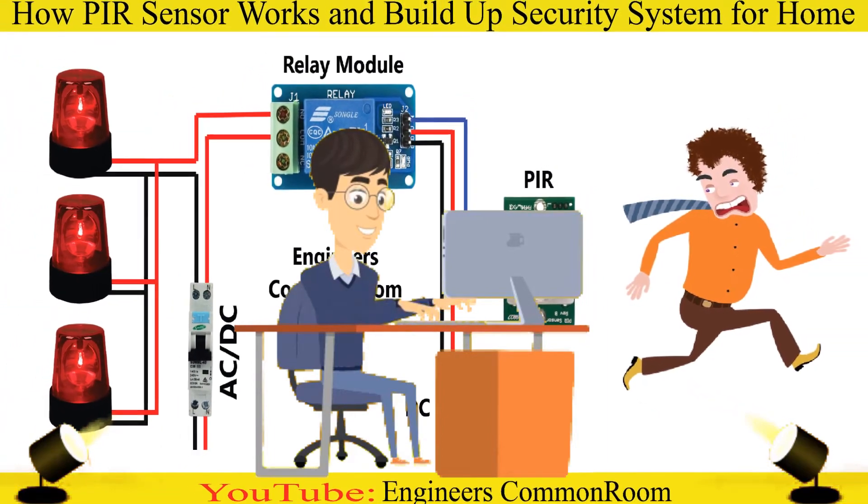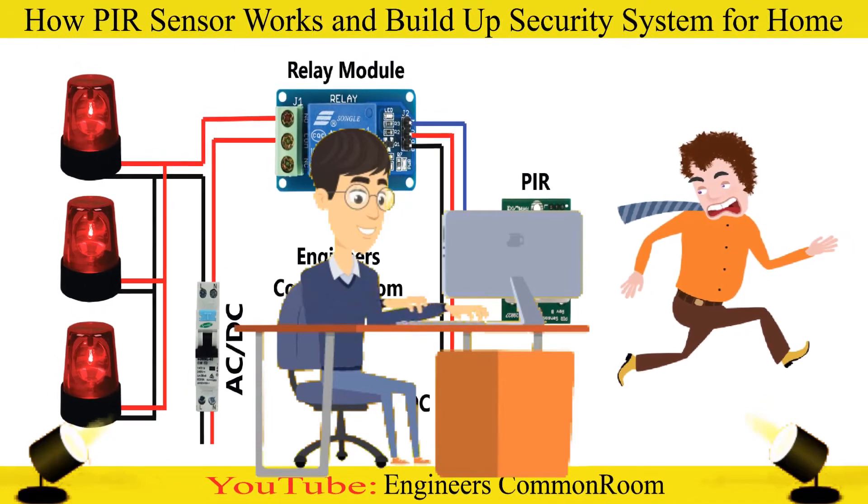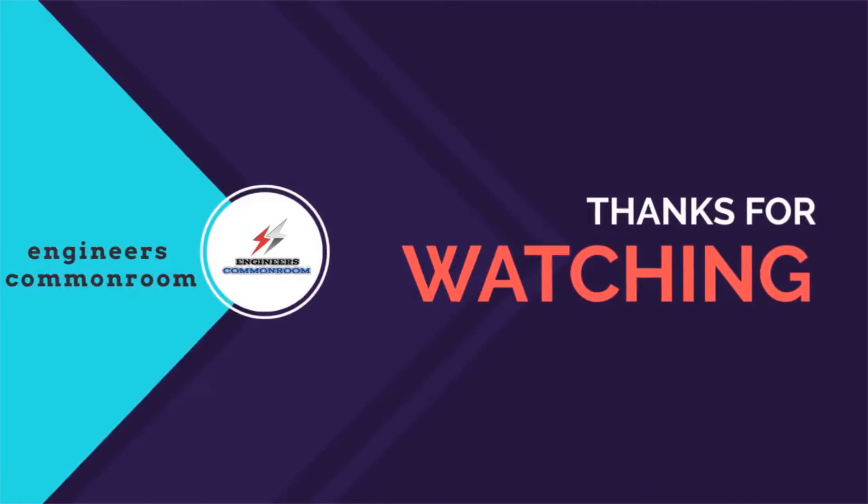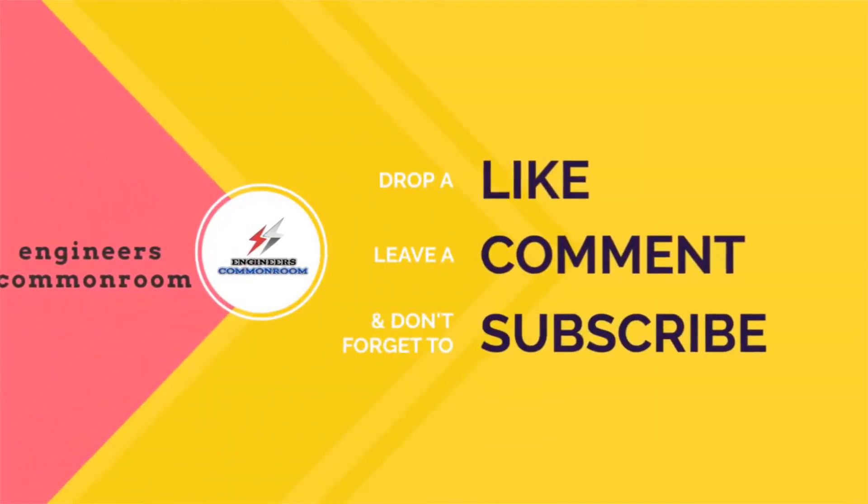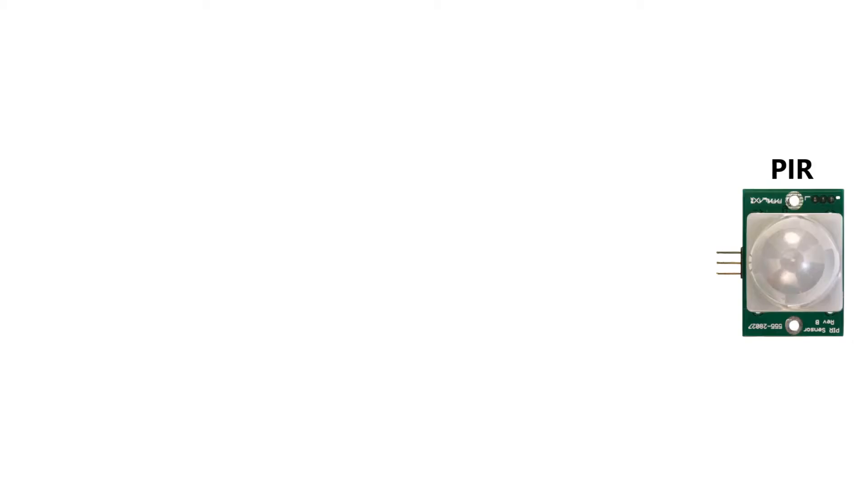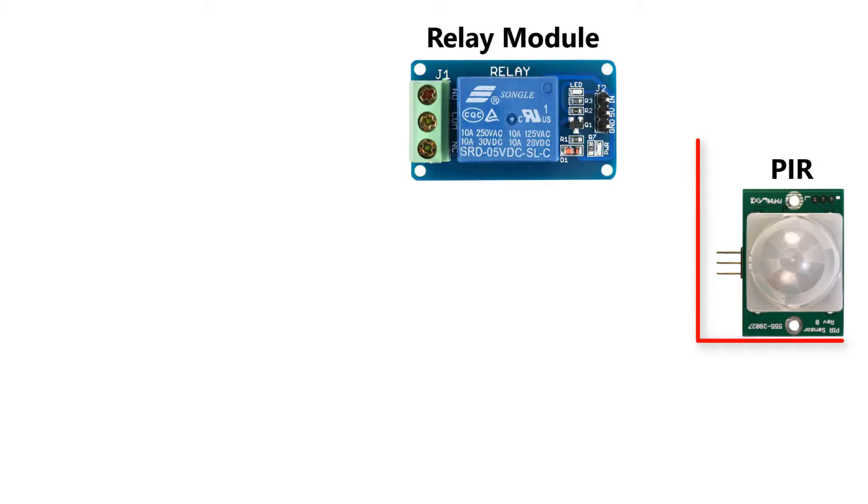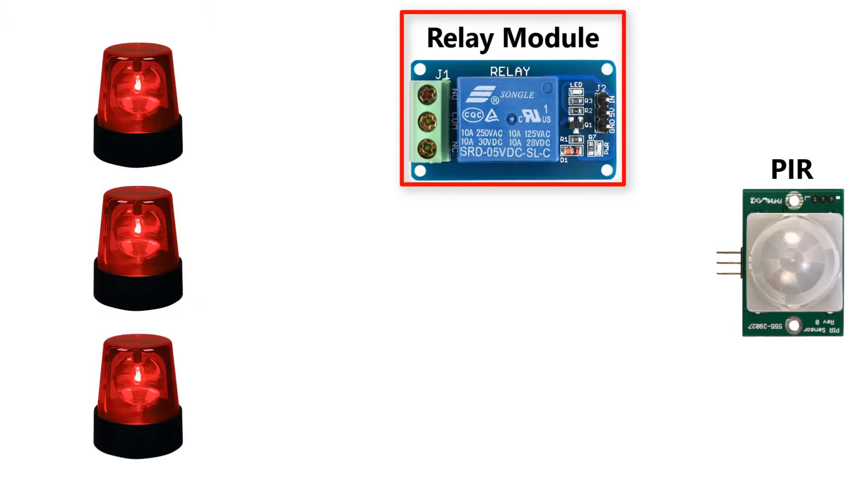Now we are going to connect the full system. Let's start. To build up the security system we need some parts: PIR sensor, relay module, 5 volt power supply, and some lights.